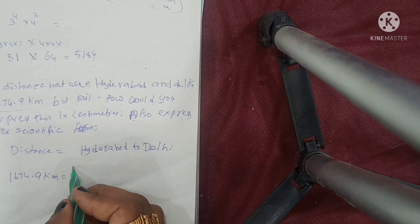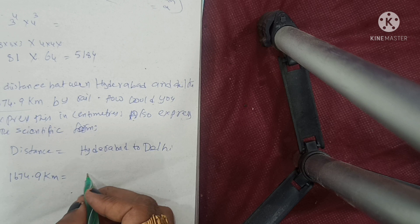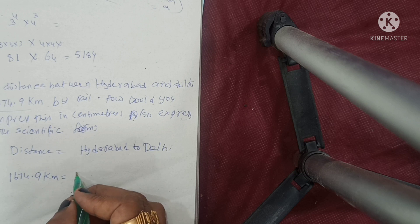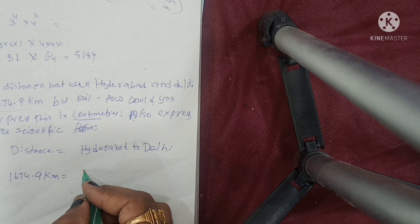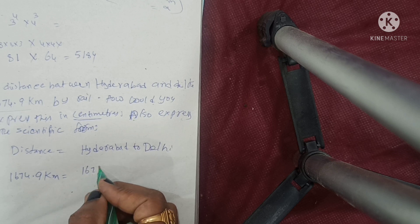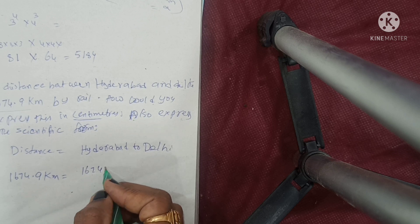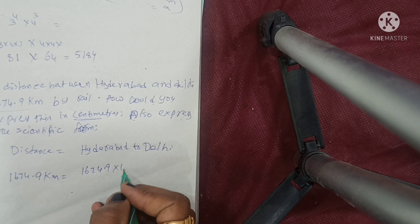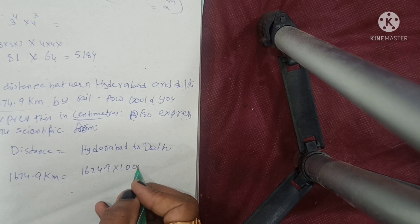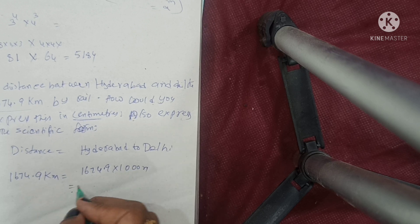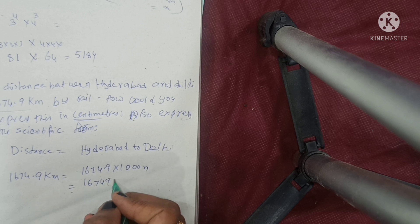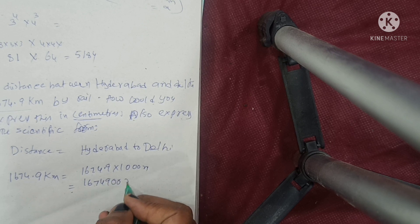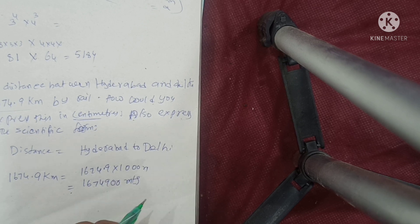The distance is 1674.9 kilometers. One kilometer equals 1000 meters, so converting: 1674.9 into 1000 meters equals 1,674,900 meters.